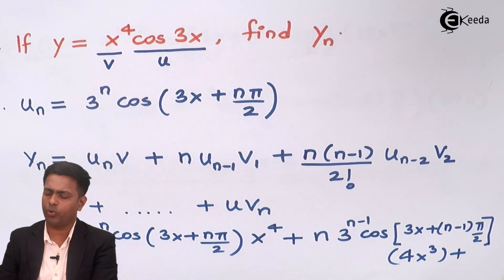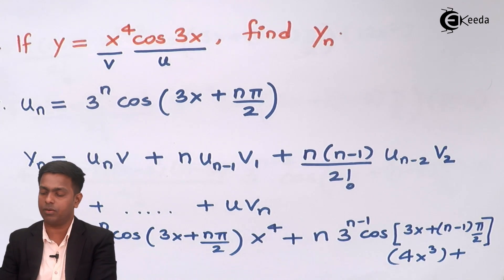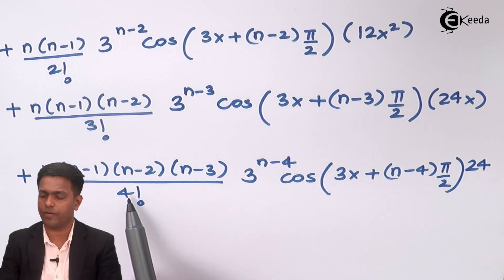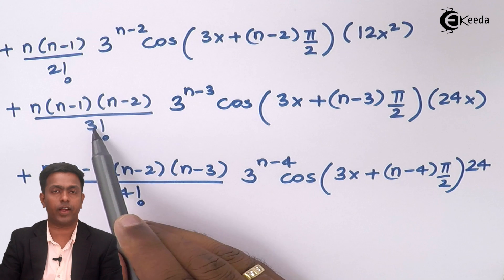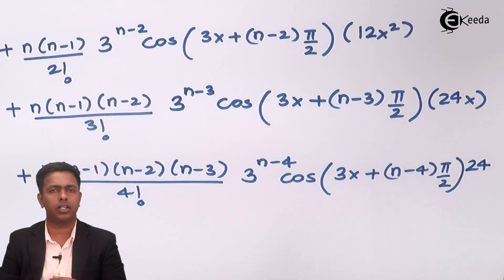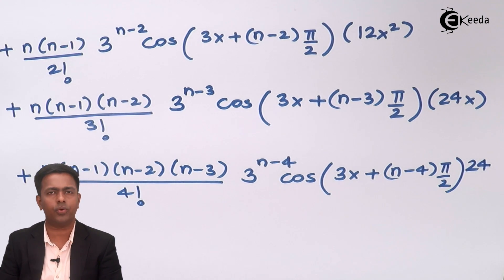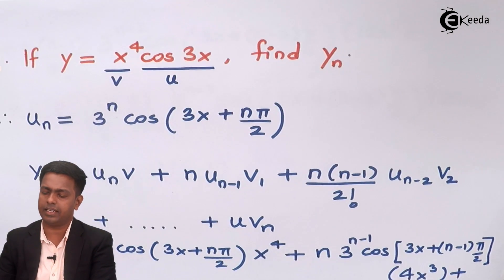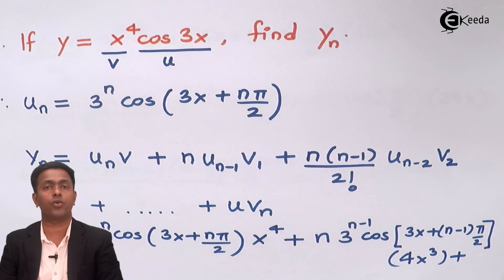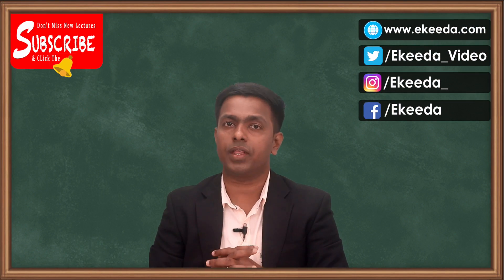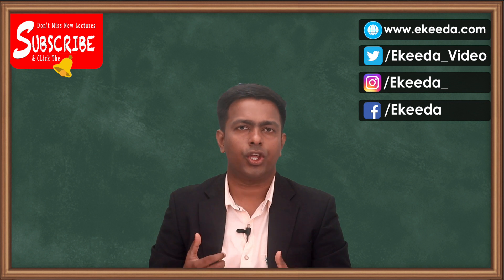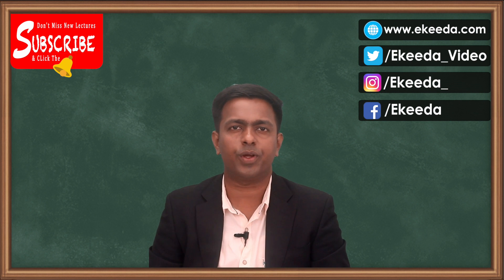You may simplify the terms further — for instance, 24 can be cancelled with the 4 factorial (which is 24), and the 3 factorial (which is 6) can be adjusted against 24. Apart from those adjustments the remaining terms stay the same. This is the nth derivative of x⁴ cos(3x) using the Leibniz theorem for u times v type functions.